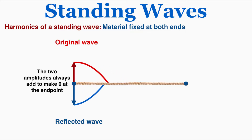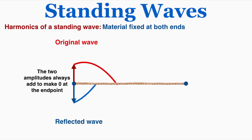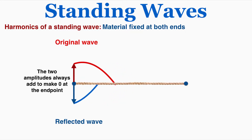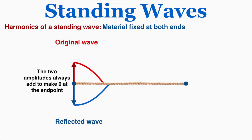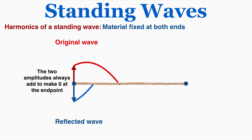Those two amplitudes always add to zero at the very end of the material because they're perfectly balancing each other out. The traveling waves that make up the standing wave are constantly being reflected and inverted at the endpoints, and because they're reflected and inverted their amplitudes are perfectly canceling each other out. So the amplitude of the standing wave there is always zero. That's how our understanding of wave reflection helps us understand standing wave behavior — for material fixed at both ends, the waves reflect and invert so their amplitudes always add to make zero.